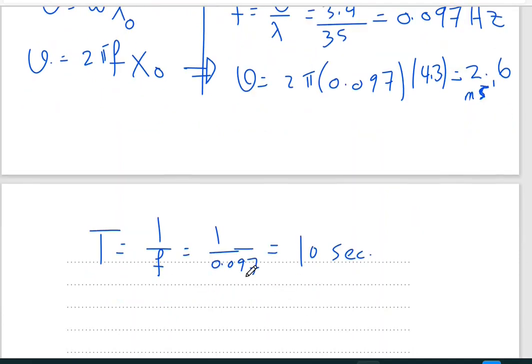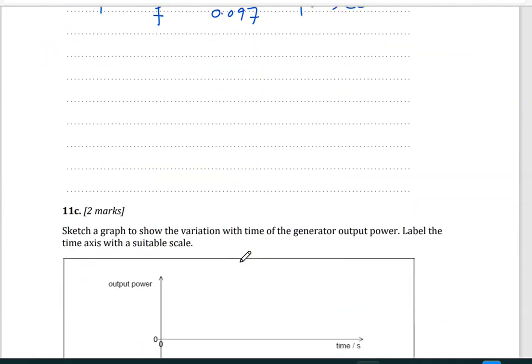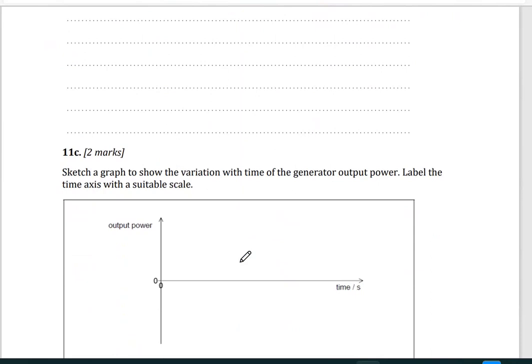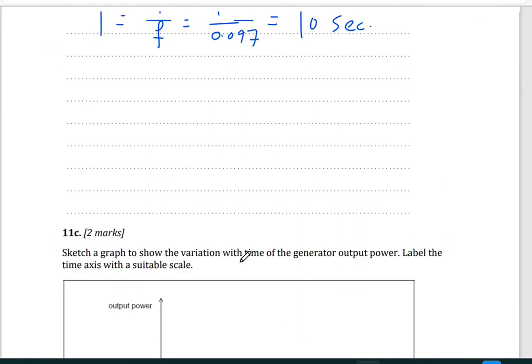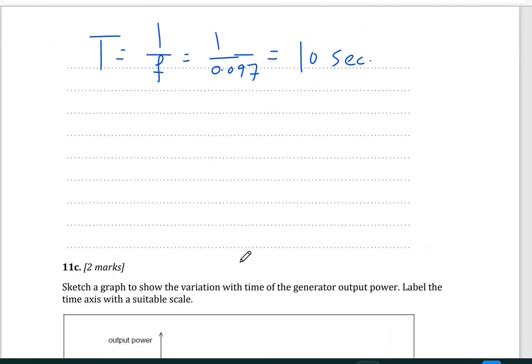Now we're dealing with simple harmonic motion. We know power is energy over time because the second question, he wants you to sketch output power of the generator divided by time. We can think of it since we're dealing with simple harmonic motion. The velocity, it's X sine or cosine.